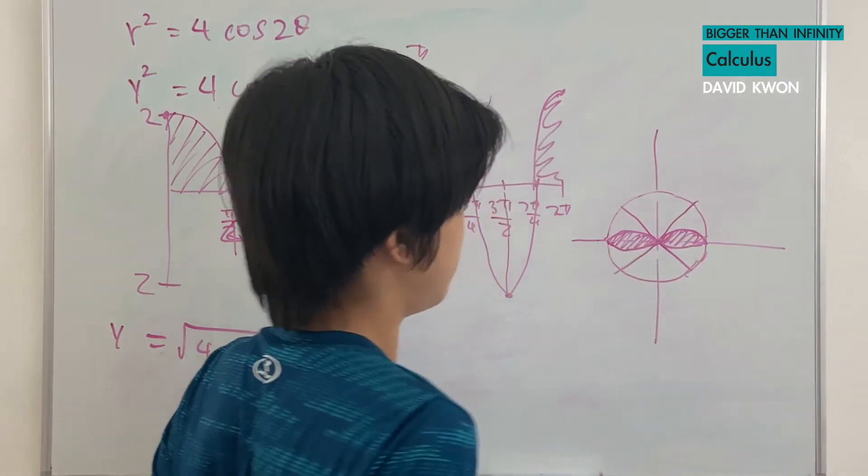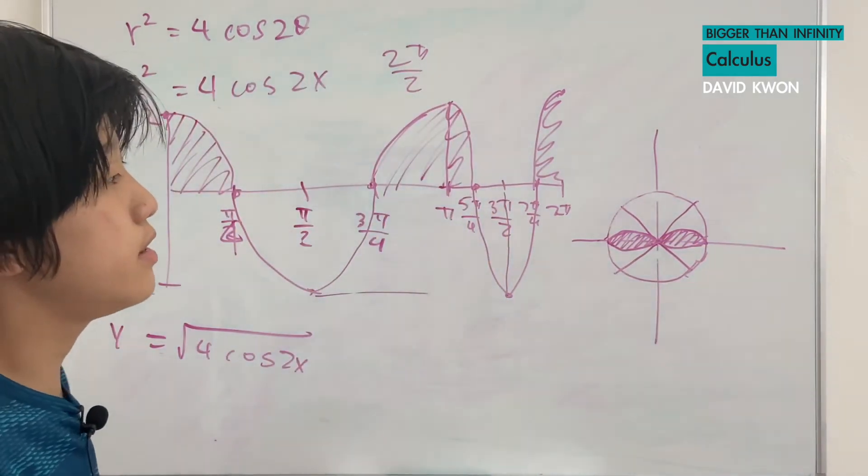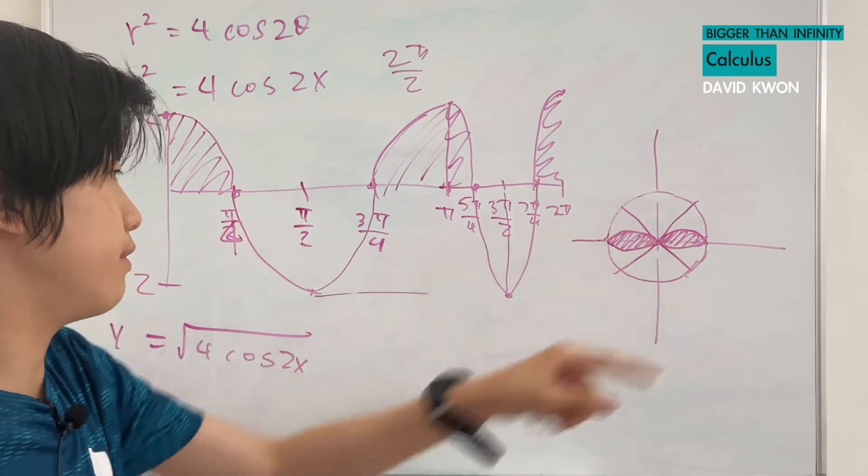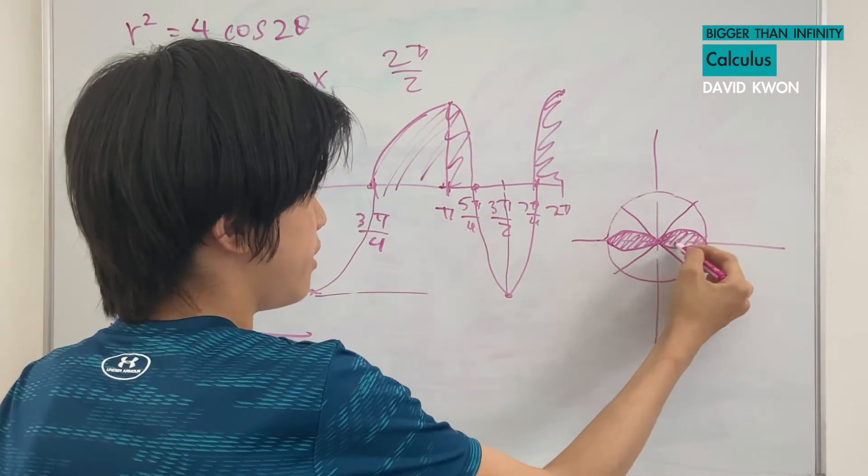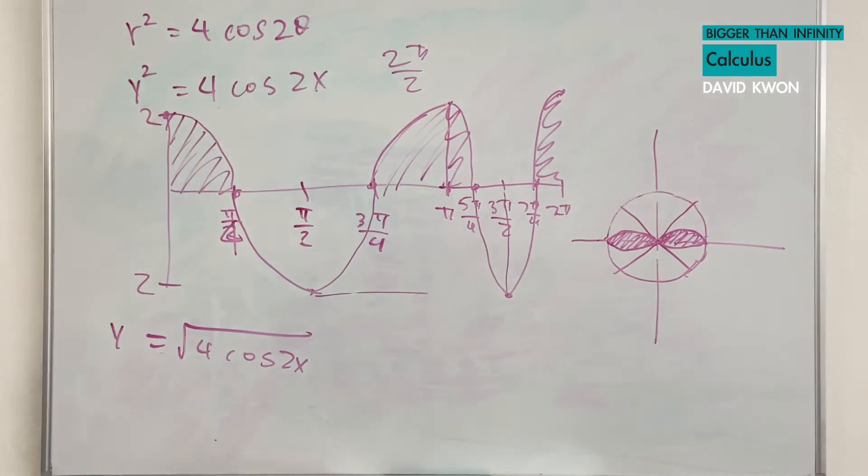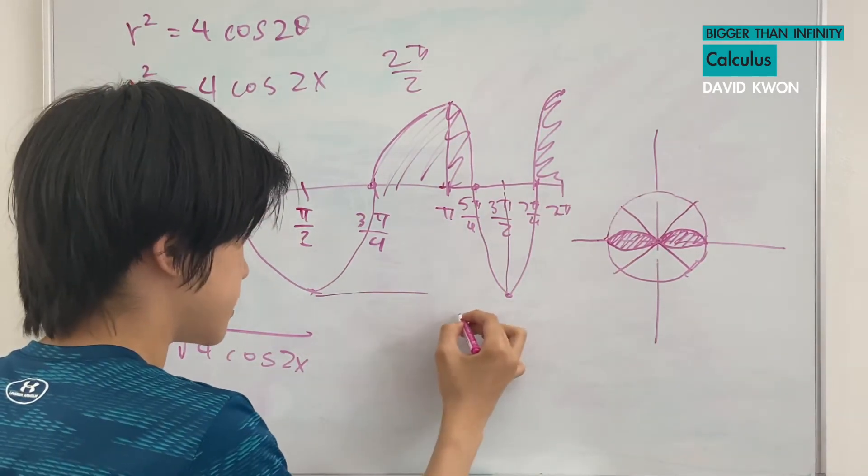So, I will just find the area of both of them. And now, to find the area of a polar curve is to use this method.